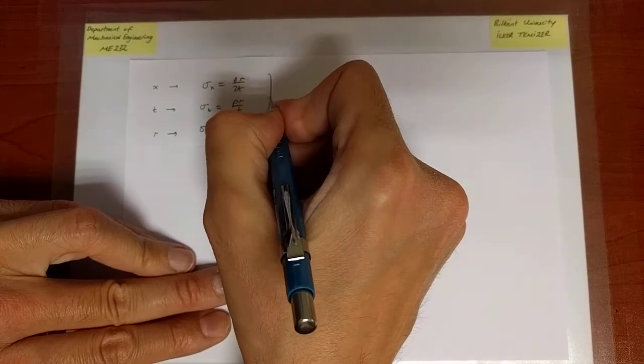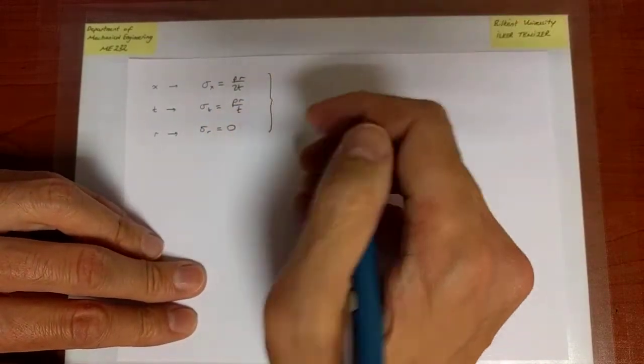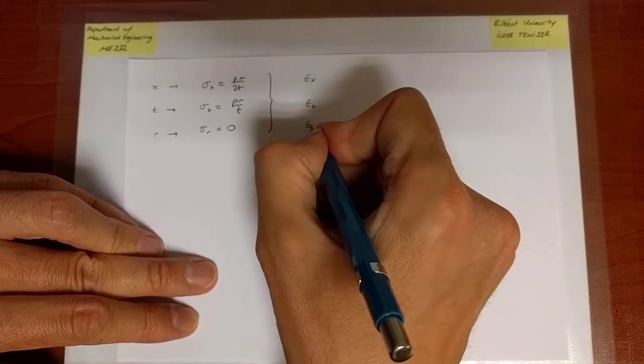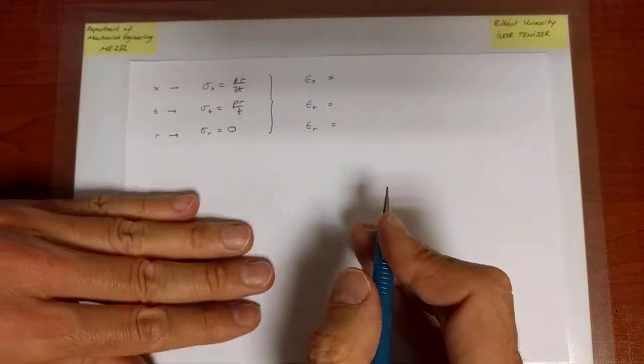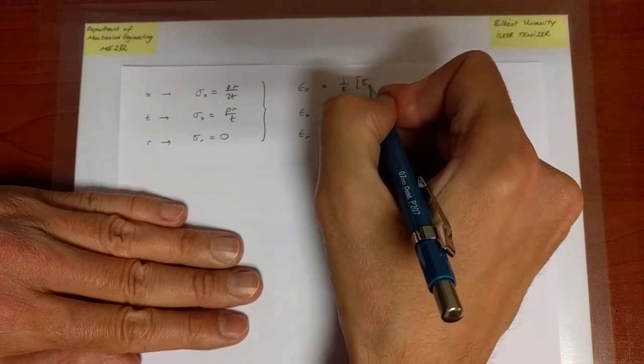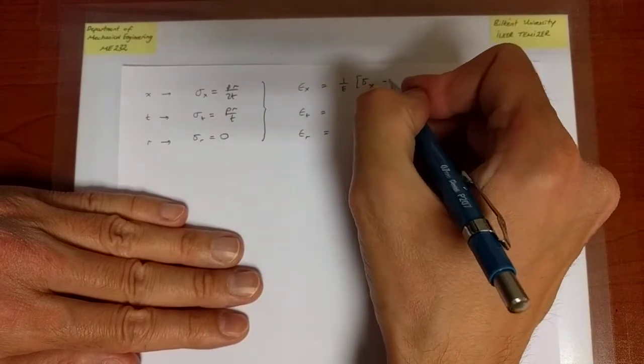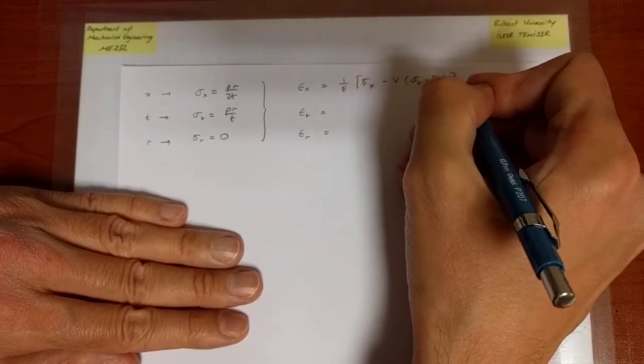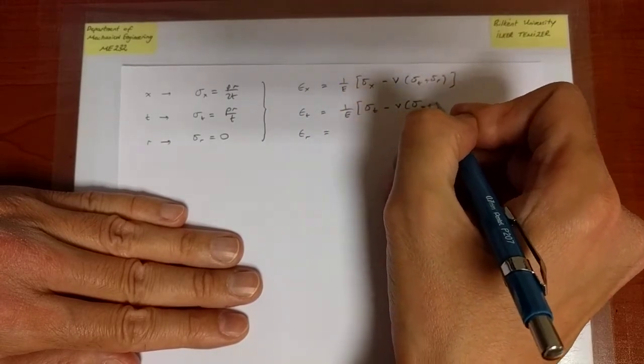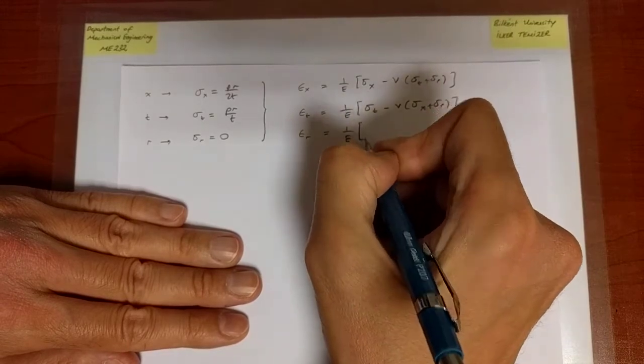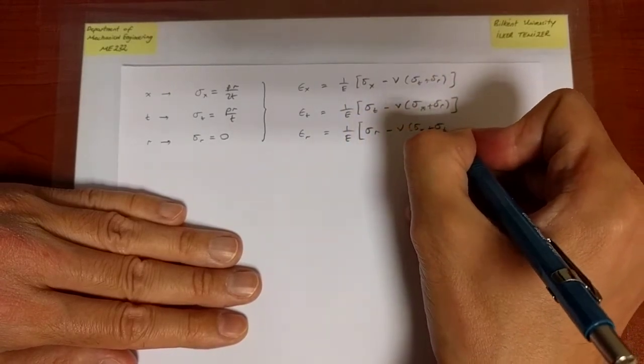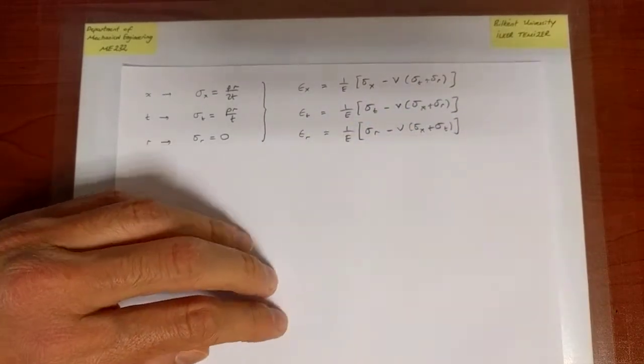Now the question is what are the strains, because I need to know what they are to find the dimension changes. Now I can go ahead and apply the generalized Hooke's law in terms of this coordinate system. It really doesn't matter what I call them—the law is going to apply. So it's going to be 1/E times sigma_x minus nu times (sigma_t plus sigma_r), and 1/E times sigma_t minus nu times (sigma_x plus sigma_r), and 1/E times sigma_r minus nu times (sigma_x plus sigma_t)—stress in the corresponding direction minus nu times stresses in the remaining directions.